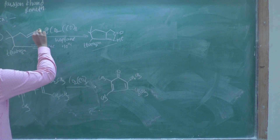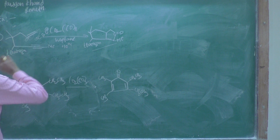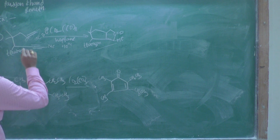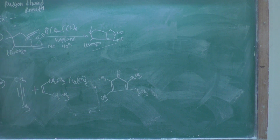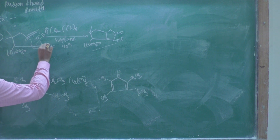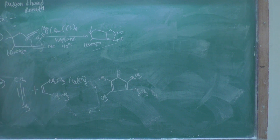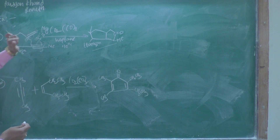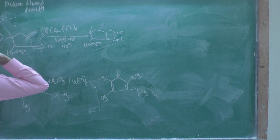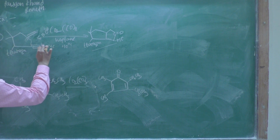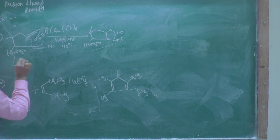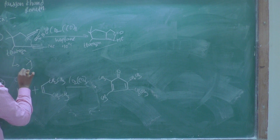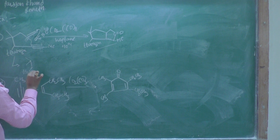That negative charge attacks this carbon atom, and therefore a negative charge is formed on it. That negative charge then attacks this carbon atom, resulting in the formation of a negative charge. The product formed here is noted as BUMVO2N.